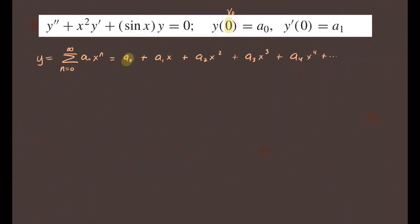So the goal is to figure out these coefficients. The first two coefficients, or the initial conditions, are given to us. So we have a₀ equals y(0) and y′(0) equals a₁ — those are the two initial conditions we're given. We're not going to do the typical way of finding the solution because of the coefficients; we're going to try a different approach.